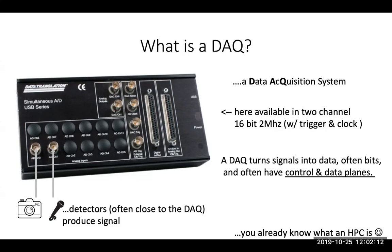I'd start off with one that you could find at a garage sale — a USB DAQ. For those of you not familiar with the term, it stands for data acquisition system. You could play around with this one without safety training or a team of 20 people. It takes the signal from a detector and produces data from it — we often get bits, and we have some control over how those bits are formed. Think of it like a camera and a microphone.